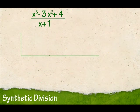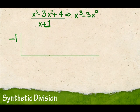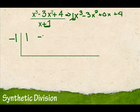Let's use synthetic division. First I wrote out my half a box. Then I look here and I say, what's the opposite of a plus 1? That's a minus 1. Then I look here. Now just like in long division, this has to be in descending order. Do you see that I'm missing an x? So I would need to rewrite this as x to the third minus 3x squared plus 0x plus 4. So those are the numbers that will go here: 1, negative 3, 0, and 4.